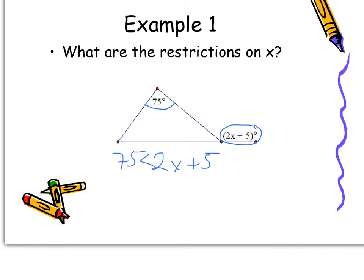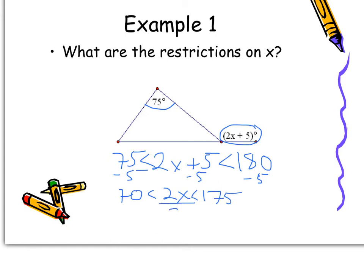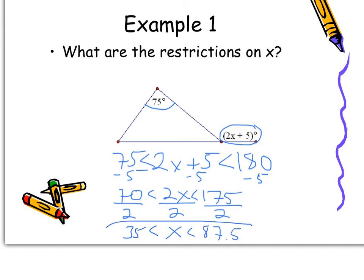If it's greater than 75, what's the biggest that angle could be? It can't be equal to or bigger than 180 because that would be a straight angle, so we know it has to be less than 180 degrees. Now we solve a compound inequality: subtract 5 from both sides to get 70 and 175, then divide everything by 2. So x is greater than 35 but less than 87.5 — those are my restrictions on x.